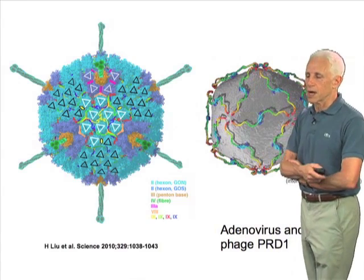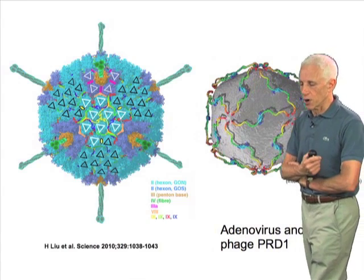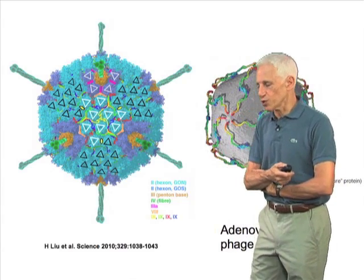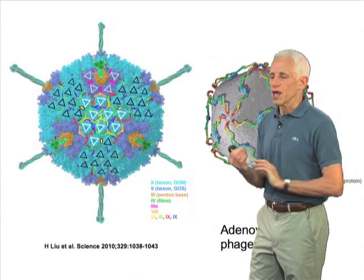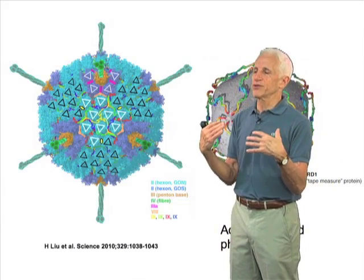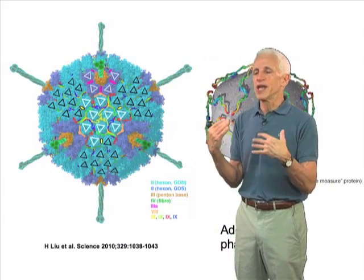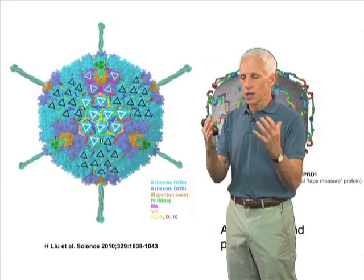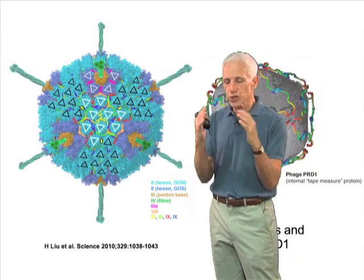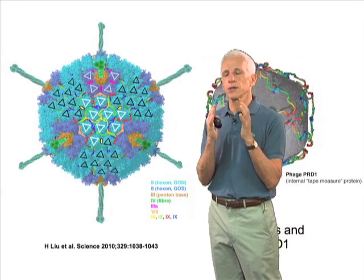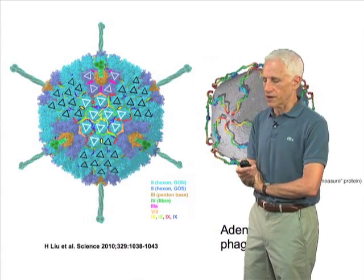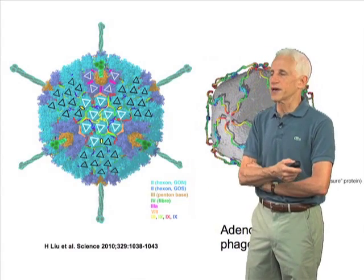Likewise, in the adenovirus particle, there are several different so-called glue or cement proteins that form, in effect, a scaffold that knits together the structure in a way that leaves no ambiguity for the size and characteristic of the final particle.